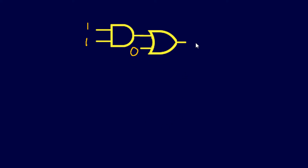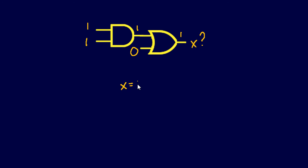For our first example, we have an AND gate and one OR gate with inputs added, and we want to find output X. We attack this one gate at a time. For the AND gate, both inputs A and B are one, so this creates a one output. Now for the OR gate: the operation says if any input is high it creates a high output. I have one low input, but the AND gate supplied a high input on the other leg. That high input creates a one on our output, so X equals one.